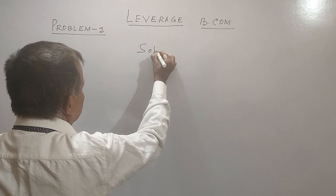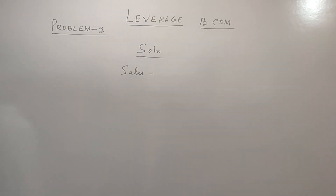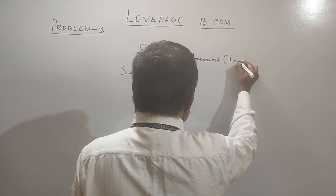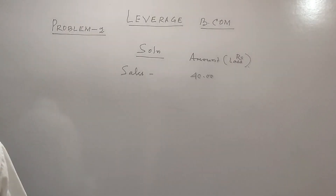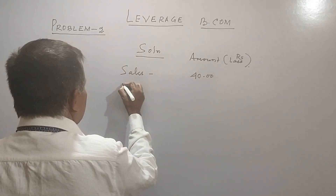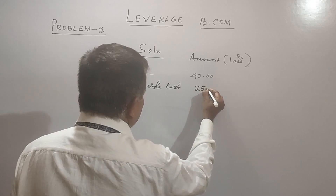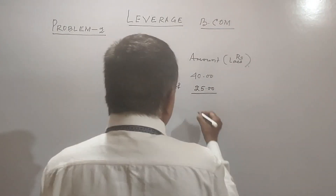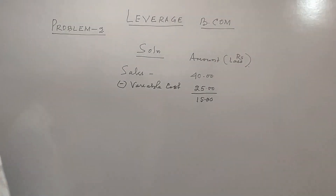Let us come to the solution. Sales is given to us — rupees 40 lakhs. Then the variable cost has been given to us, that is 25 lakhs. So contribution is coming to 15 lakhs.